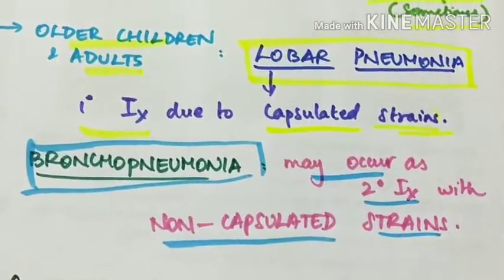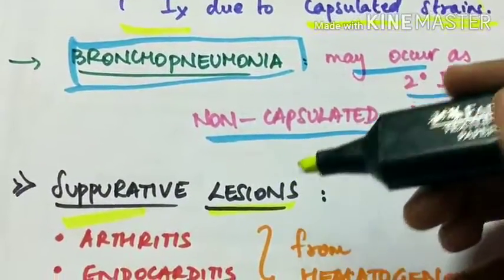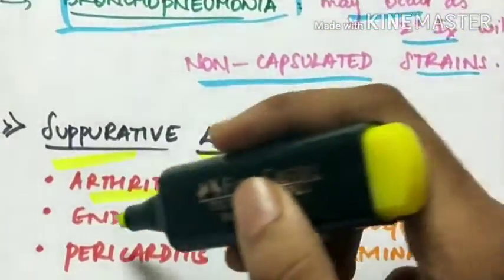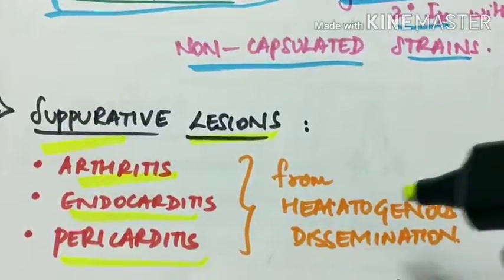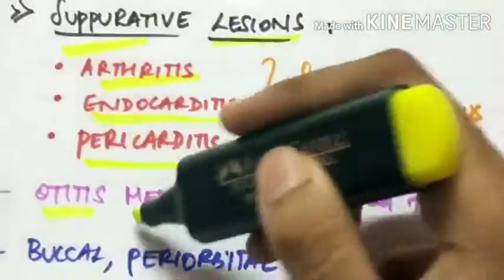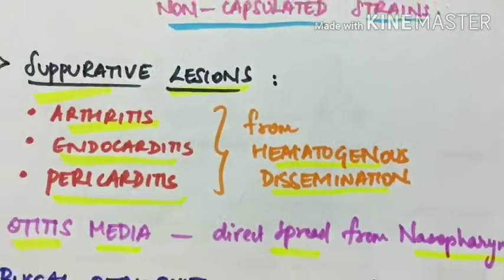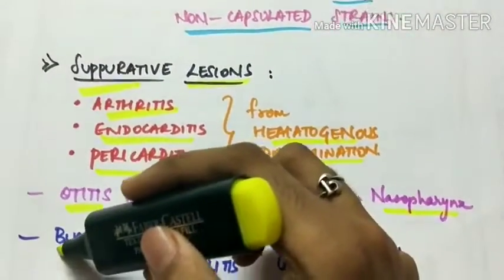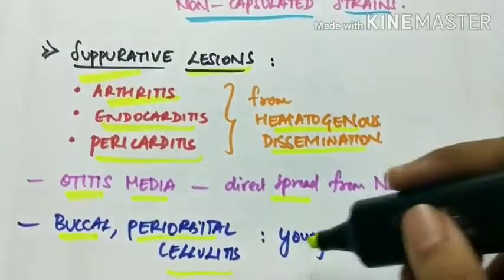And the fourth is suppurative lesions. It is pus forming lesions like arthritis, endocarditis, pericarditis. These result from hematogenous dissemination. Otitis media can occur by direct spread from nasopharynx and there is buccal and periorbital cellulitis in young children.